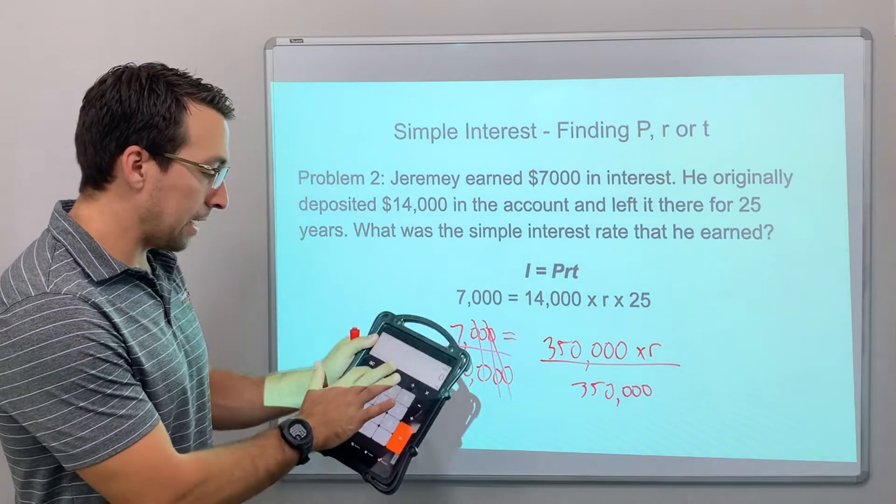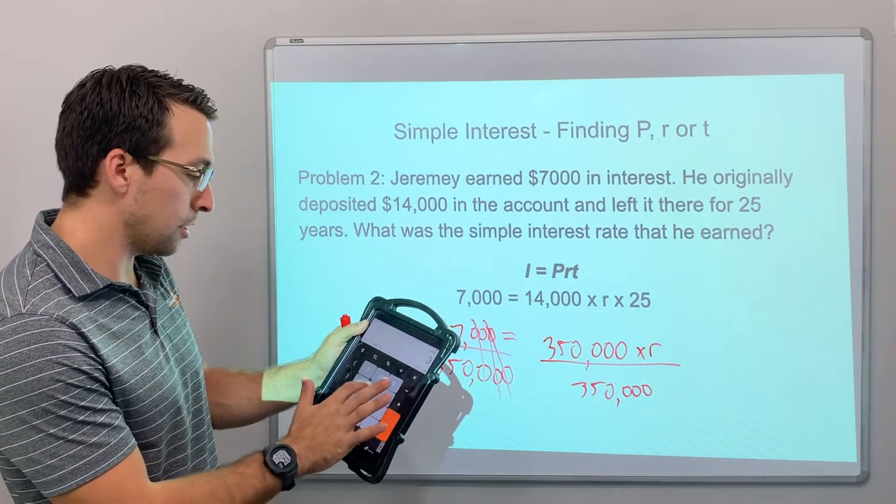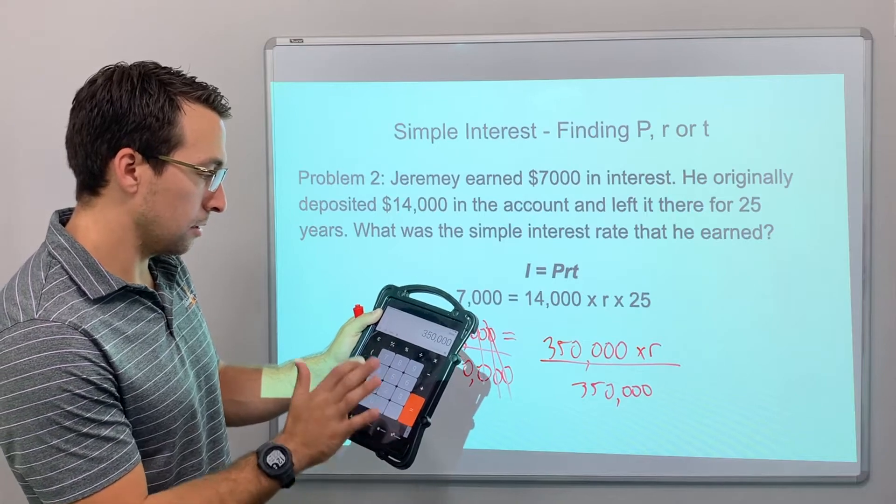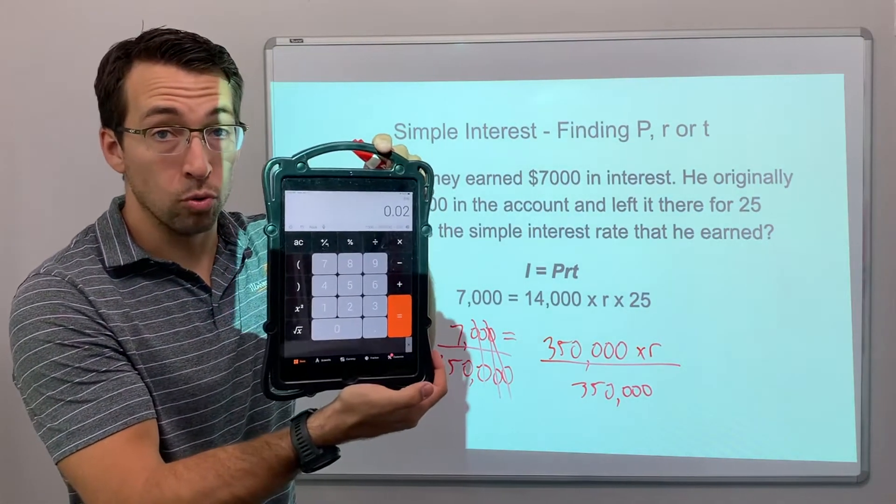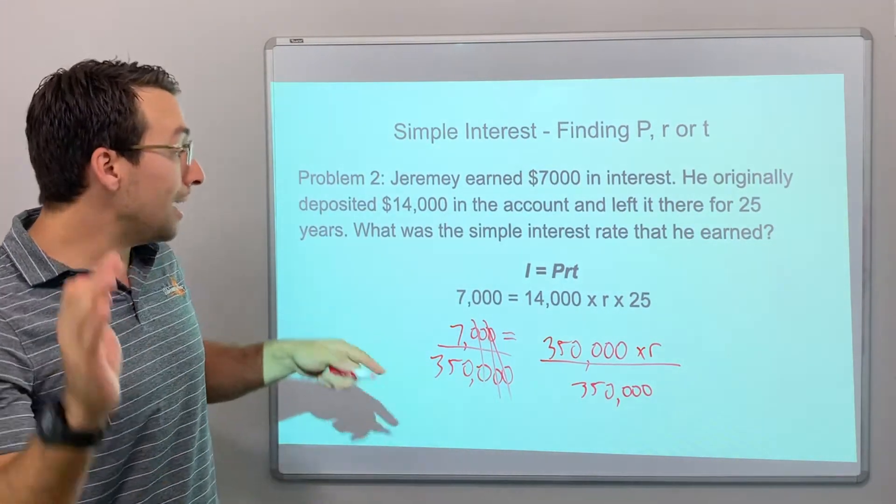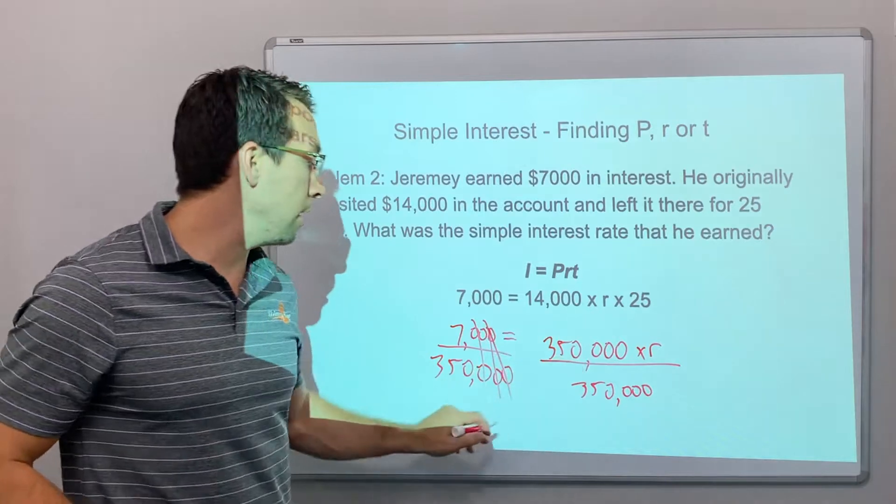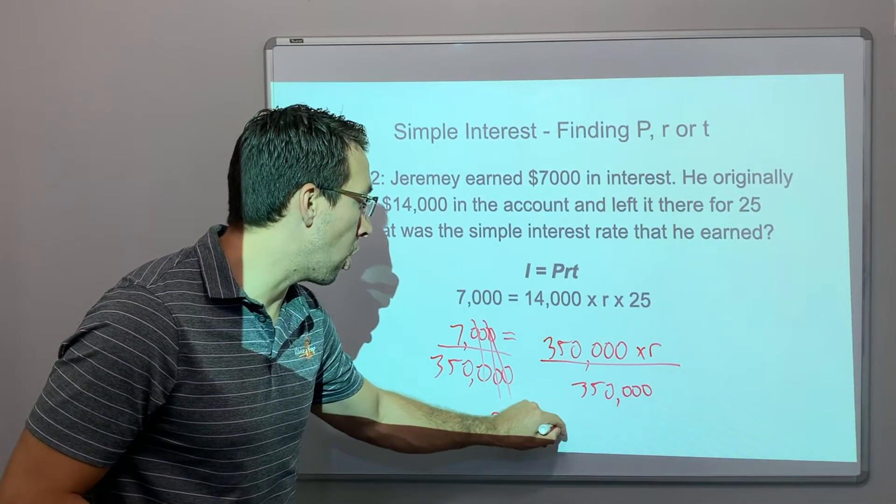All clear. 7,000 divided by 350,000 equals 0.02. So our interest rate, it's that simple. Our interest rate, R equals 0.02.